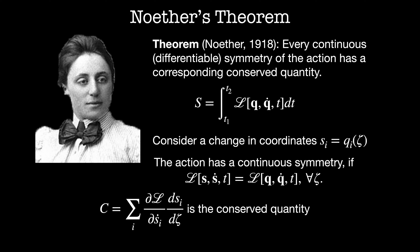Noether's Theorem states that c is equal to the sum on i of dL by dSi dot times dSi by dZeta is the corresponding conserved quantity. And we're going to derive this next.